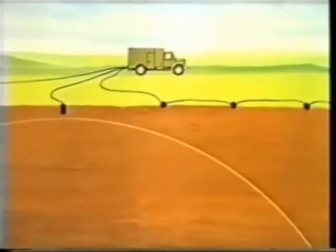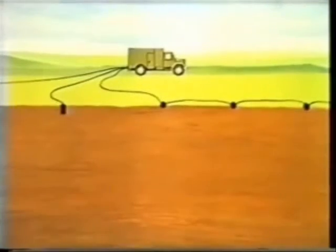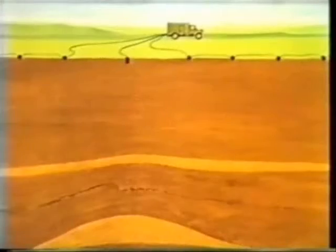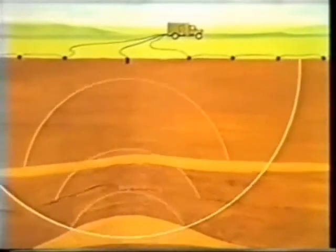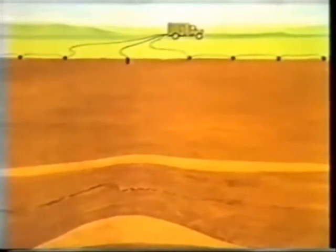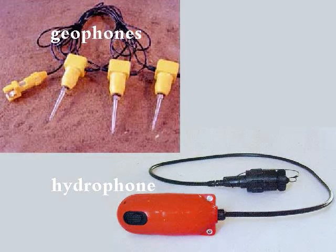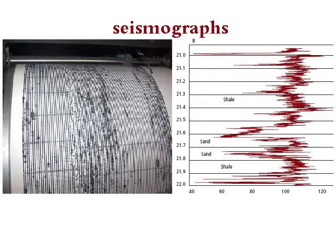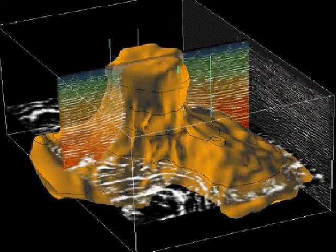Geoscientists use energy sources or guns to create sound waves that are shot down into the Earth. These waves are then measured with receivers called geophones on land and hydrophones at sea. Here are some examples of graphs created using data from these receivers, which allow us to visually illustrate the formations and rock types below.